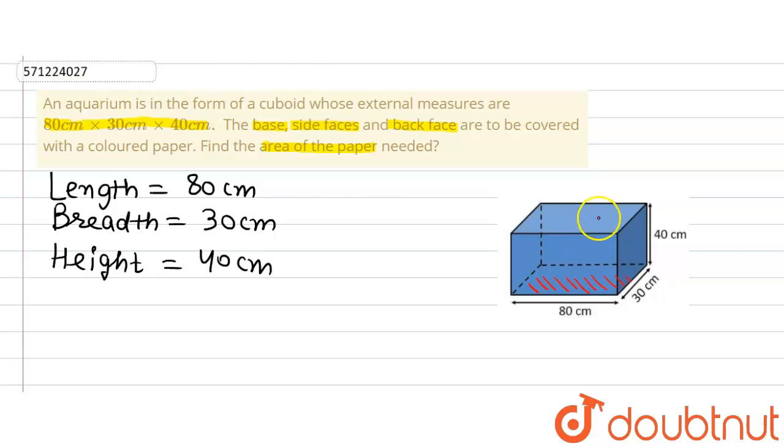Back face means the one which is the area which is behind, behind the front face and the side faces. Side faces means this face and this one, the dimensions with 30 and 40. So let's do it.